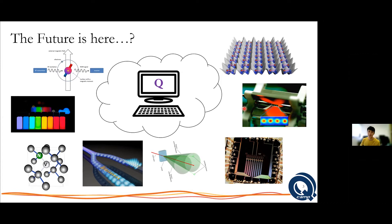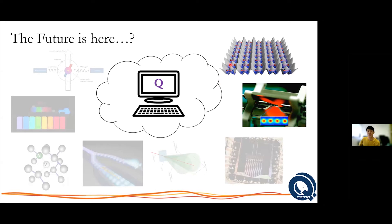Trapped ions are among the leaders in being candidates to realize a proper scalable, practically useful quantum computer. In no unbiased choice, we are going to look at a certain aspect of atomic systems that have allowed them to develop to this degree — essentially this whole idea of laser cooling of atoms that allowed everything to happen. Some people may ask: why would these systems be meaningful to look at?